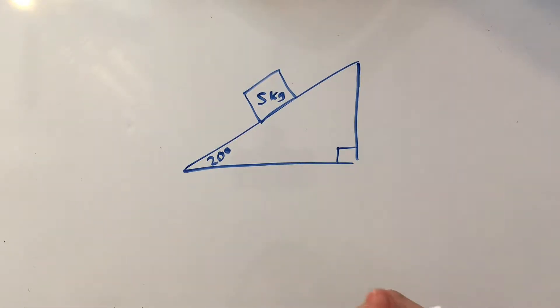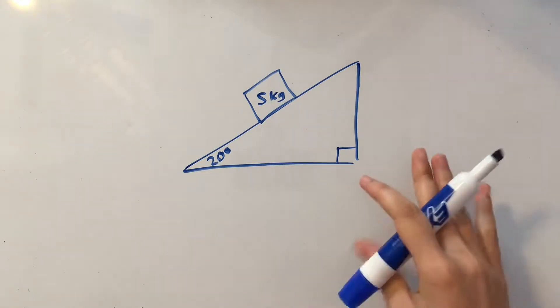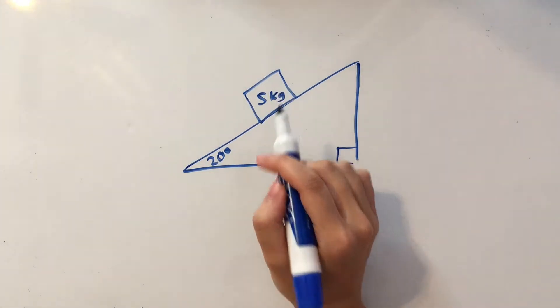Let's pretend we have a 5 kilogram block of ice moving down a hill of ice at an incline of 20 degrees. What we need to do is find the acceleration for this block of ice.